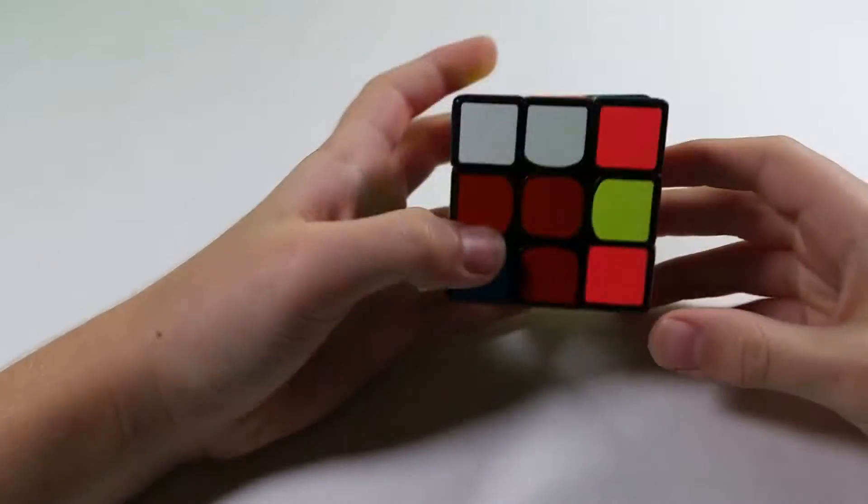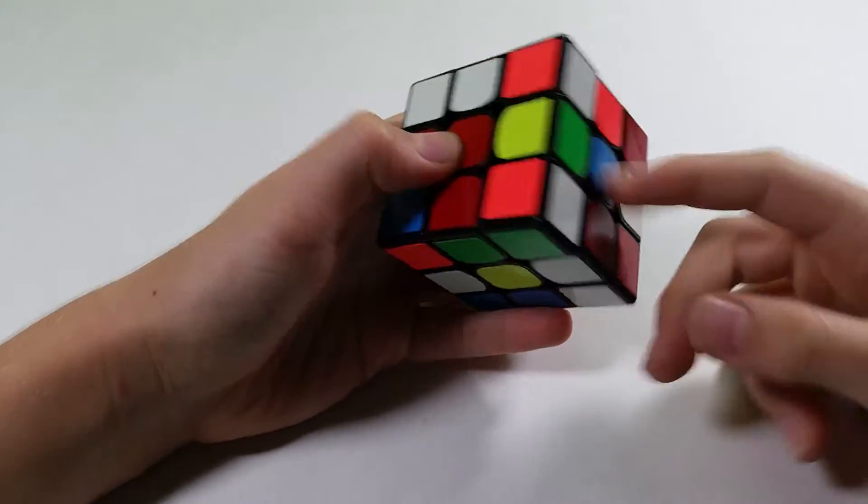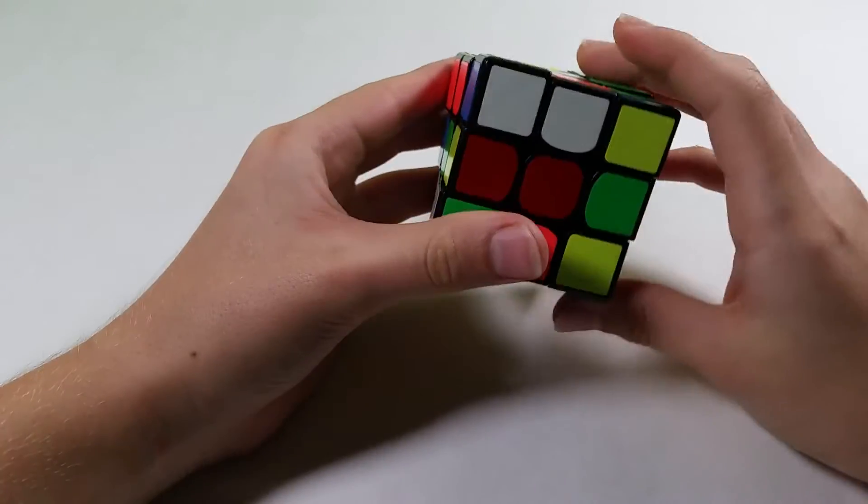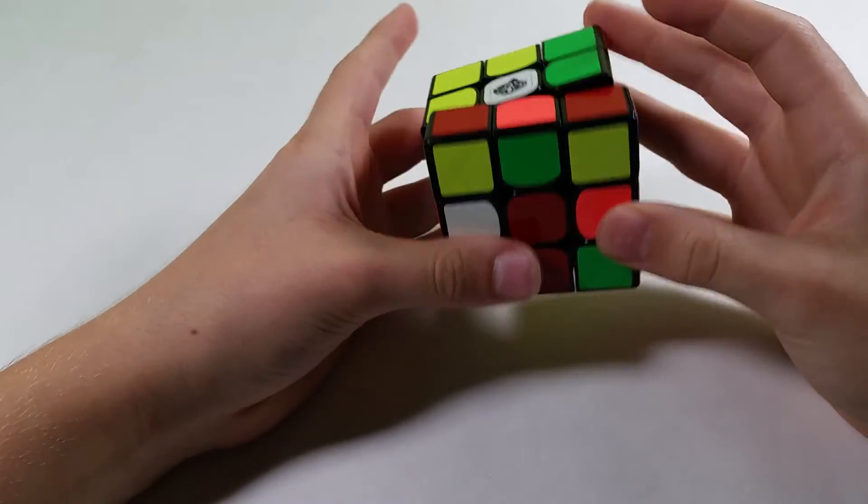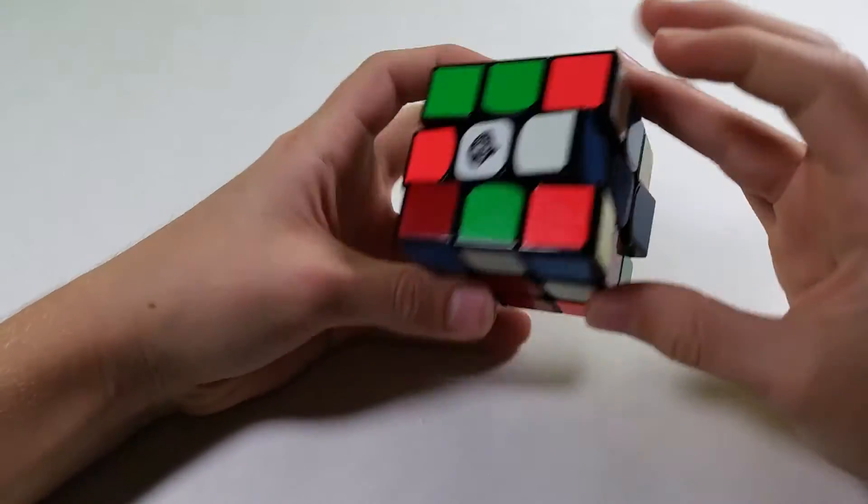This time we have a pretty easy cross on yellow. What I can do is bring this down with an R', then D2 will solve it, F' to solve this red edge, then I can do a U, R2, B2, and that'll finish off the cross.